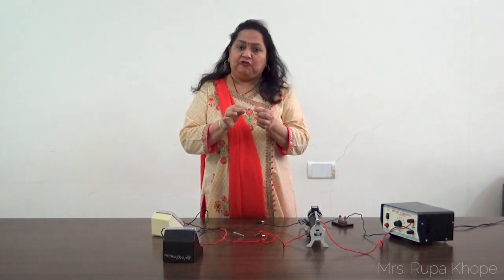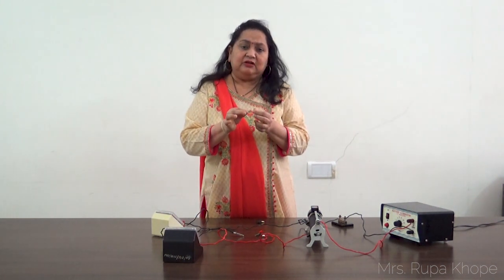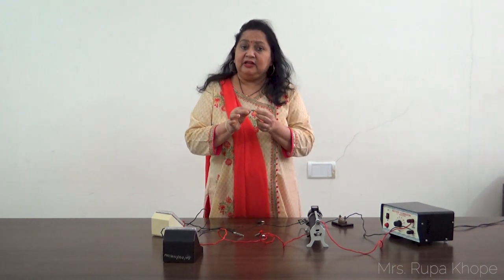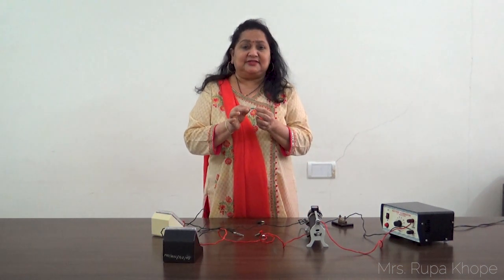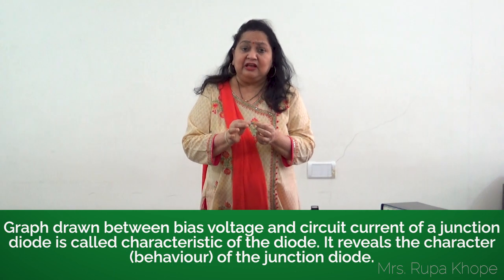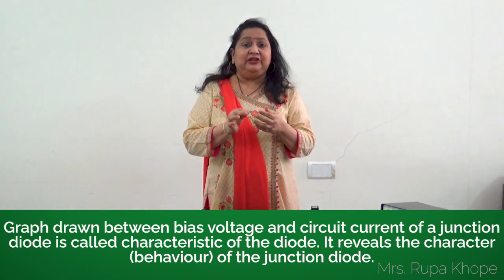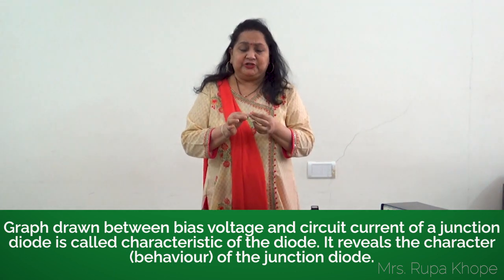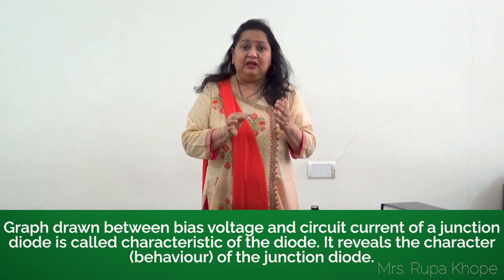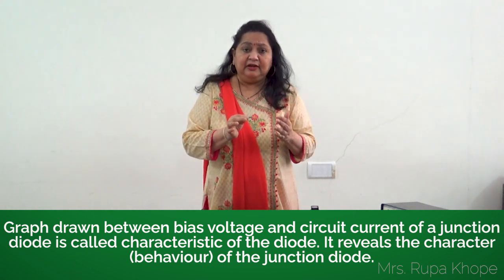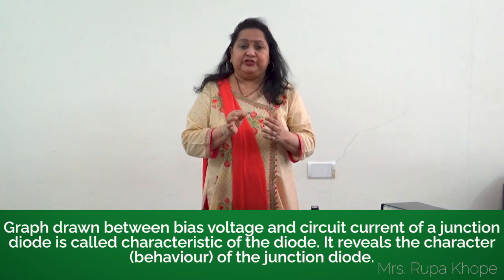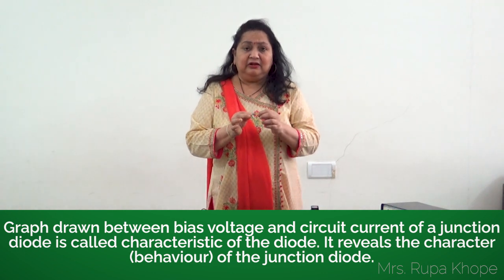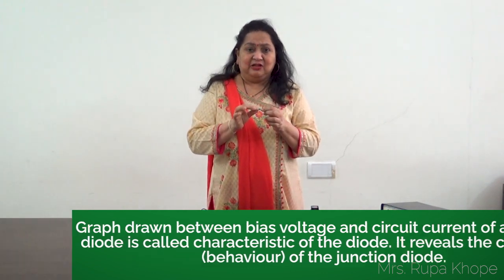Now we have to perform an experiment. What are we going to do? We will be finding the characteristics — that is, the relationship between current and voltage. Current is dependent on biasing, so we need to bias a P-N junction diode.